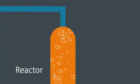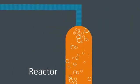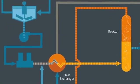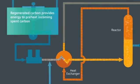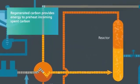After the oxidation reactions are complete, the mixture exits the top of the reactor. The hot, regenerated carbon mixture passes through the heat exchanger, where the energy is used to preheat the incoming spent carbon and biomass mixture.